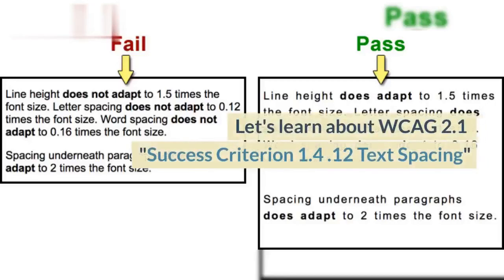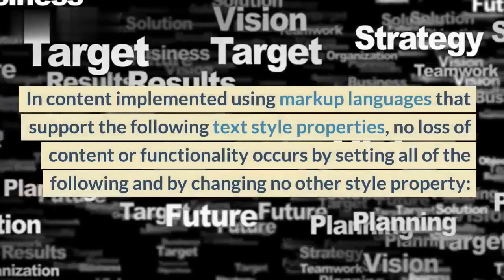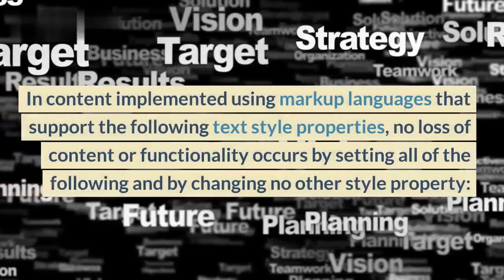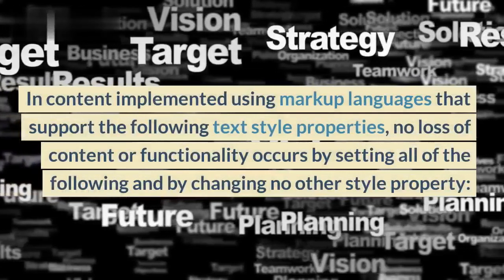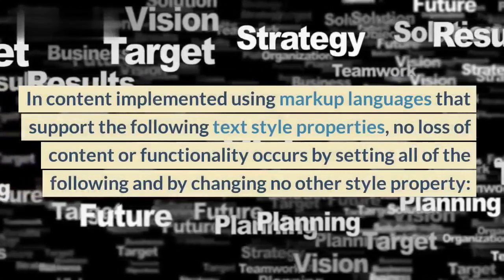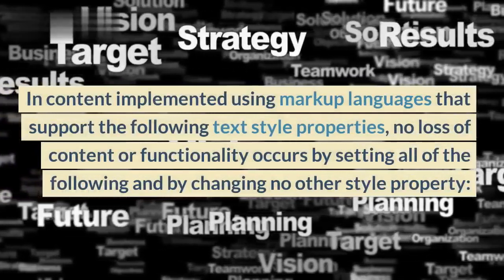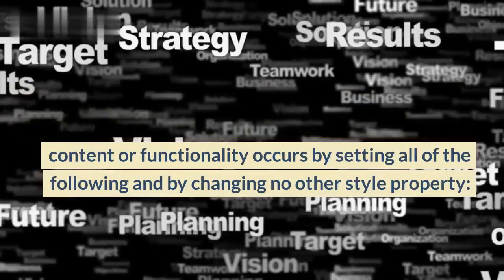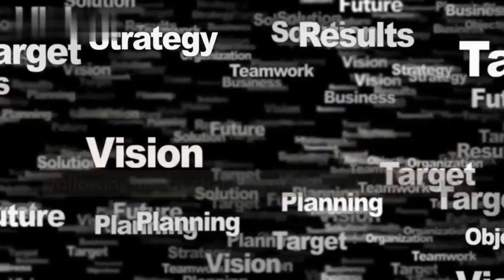Let's learn about WCAG 2.1 Success Criterion 1.4.12 Text Spacing. In content implemented using markup languages that support the following text style properties, no loss of content or functionality occurs by setting all of the following and by changing no other style property.